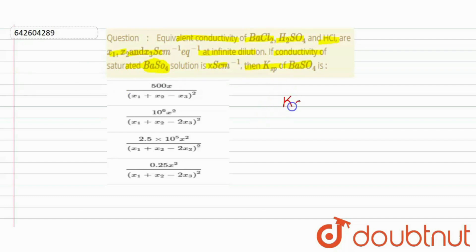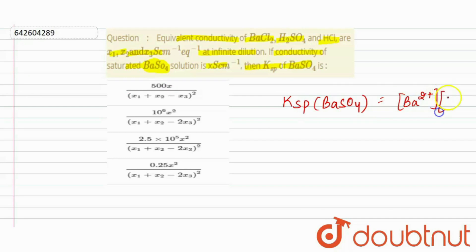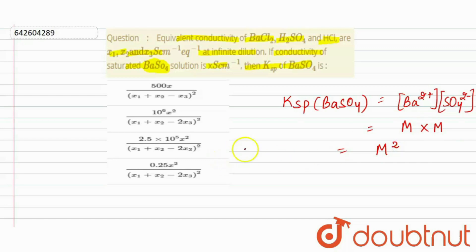We know that the solubility product of BaSO₄ is equal to the concentration of Ba²⁺ ions multiplied by SO₄²⁻ ions. Suppose the solubility is m, so for both ions it will be m. Therefore, the solubility product equals m², where m is the molar concentration.